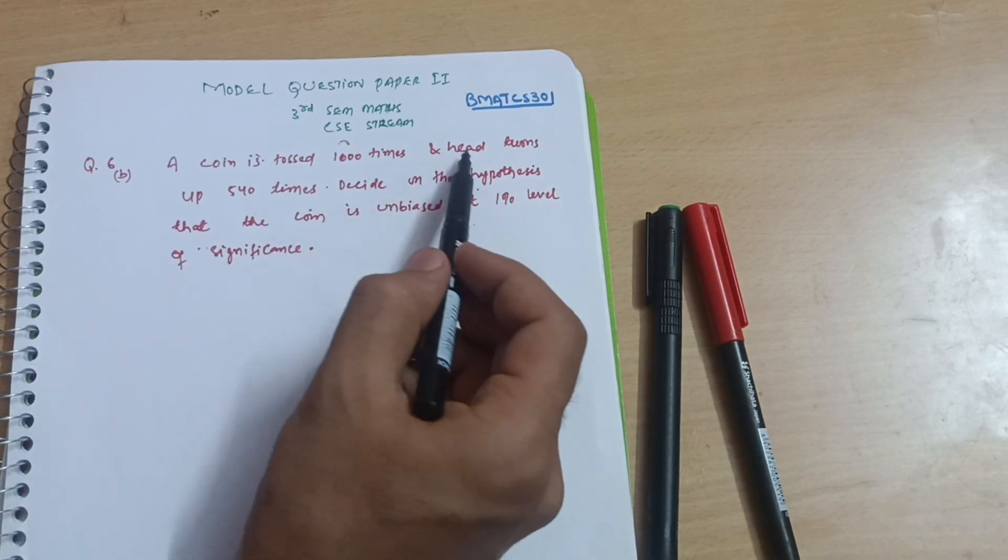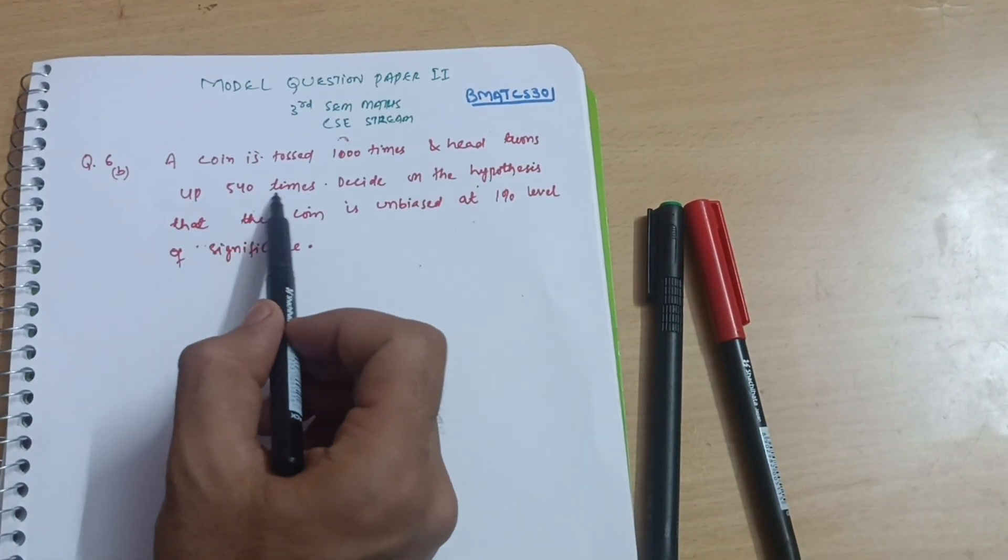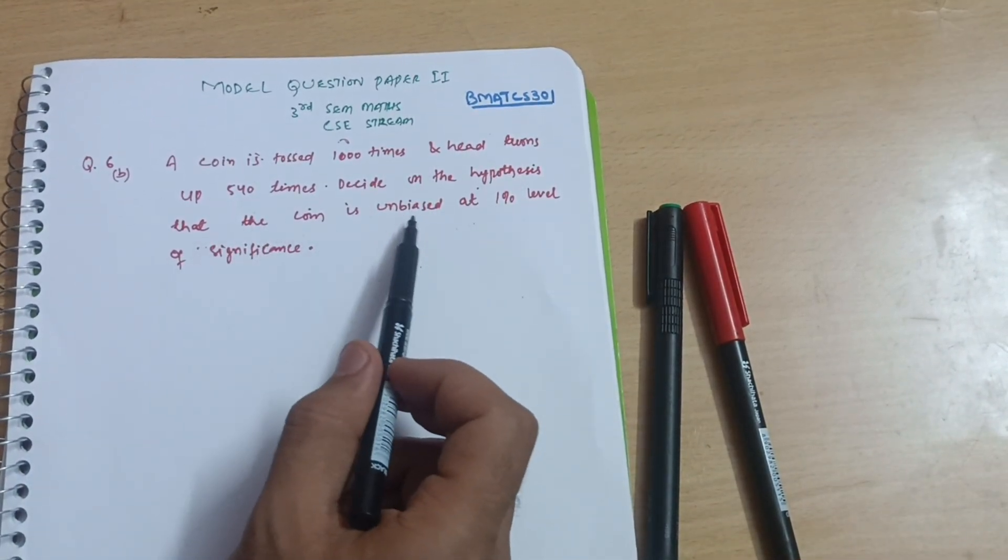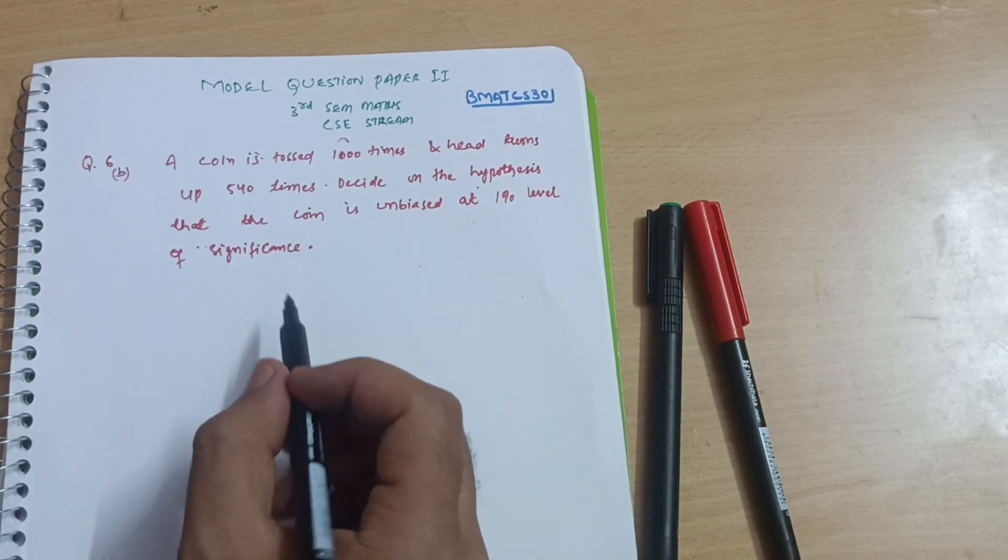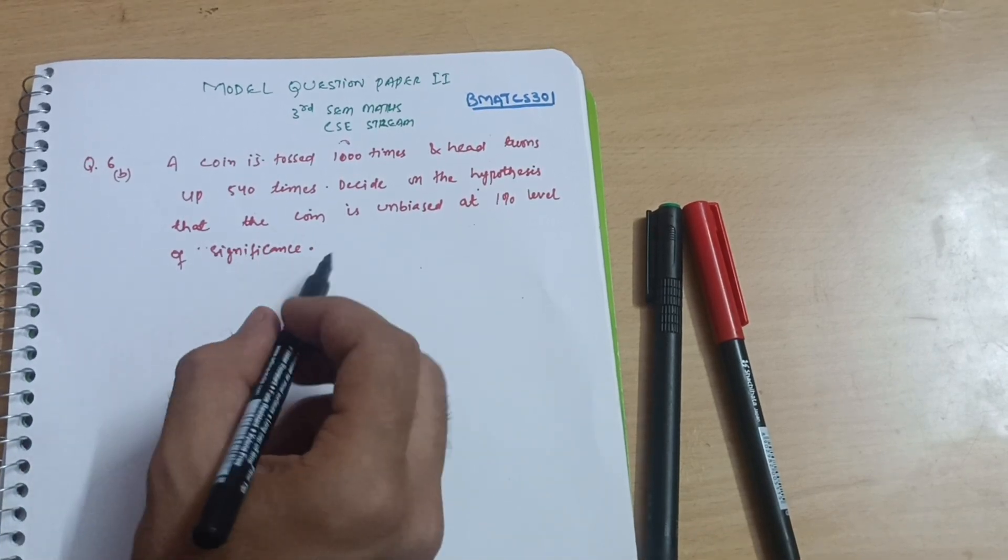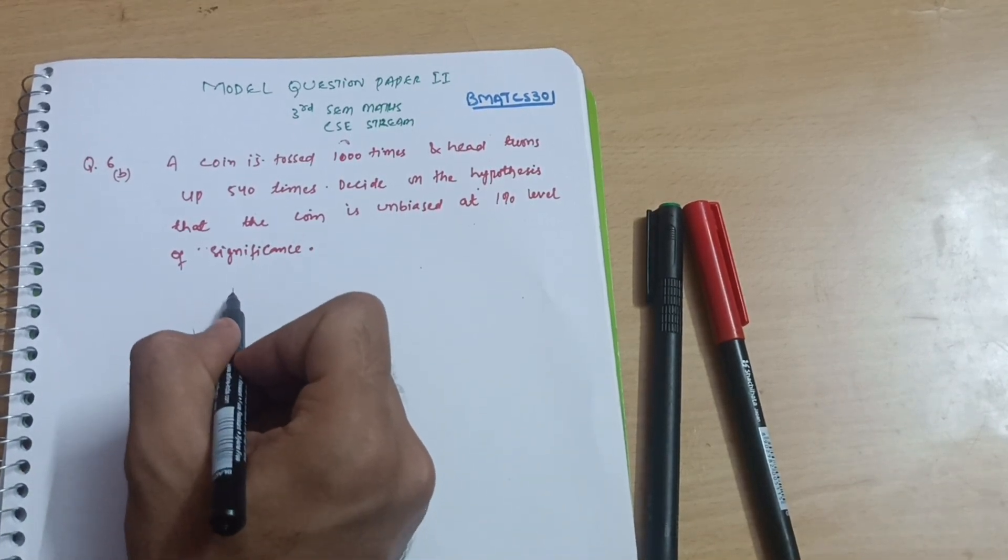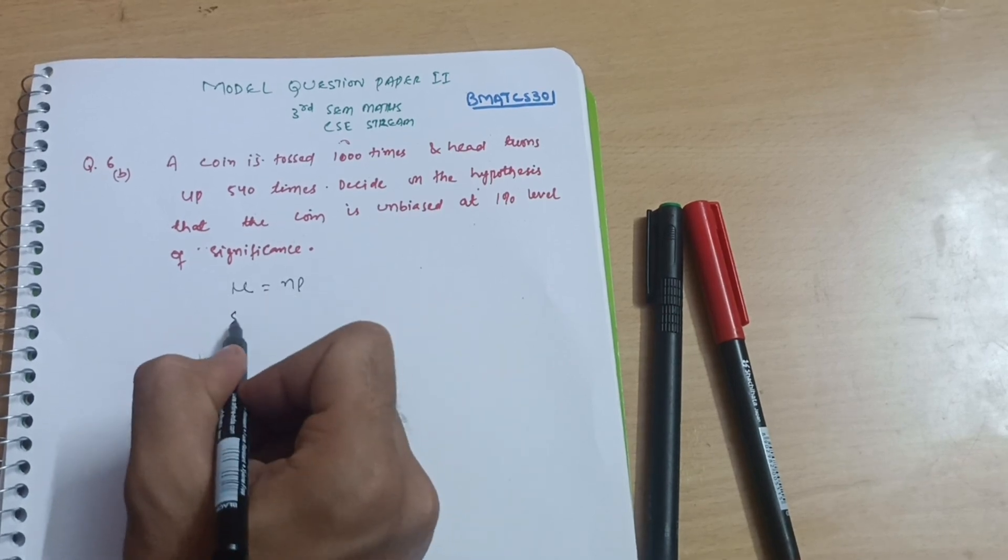The problem states: head turns up 540 times. Decide on the hypothesis that the coin is unbiased at one percent level of significance. The formulas are the same for this also.